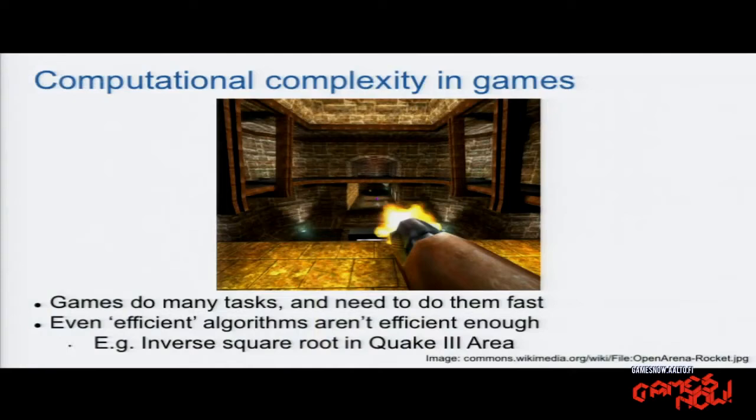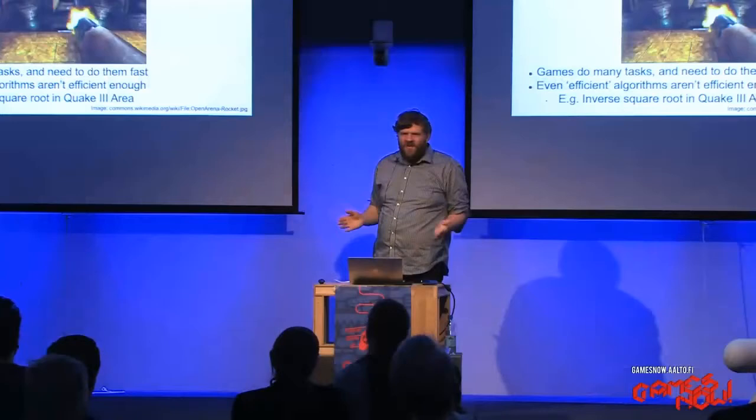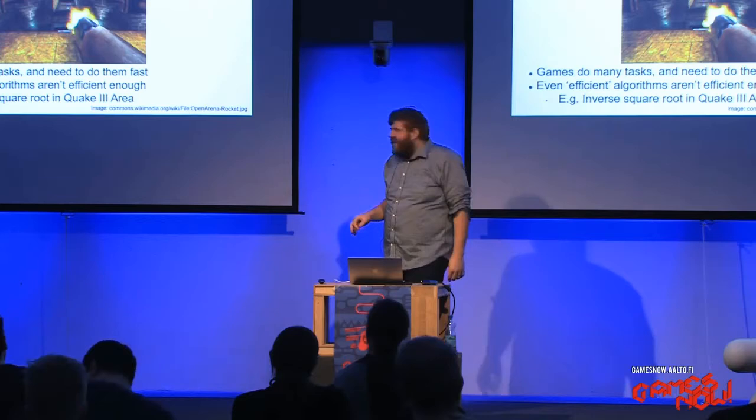It was too slow to nicely render the graphics. So there was a method used in Quake 3 Arena called the fast inverse square root, which is a really weird hack that somehow gives you pretty much the same answer using what you might call maths magic. That's an example of where you really have to get around the problem of computational complexity.